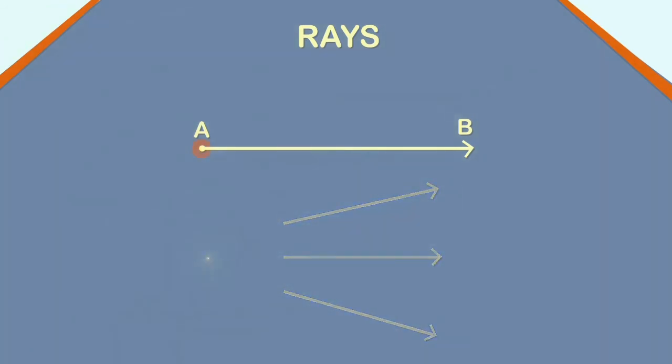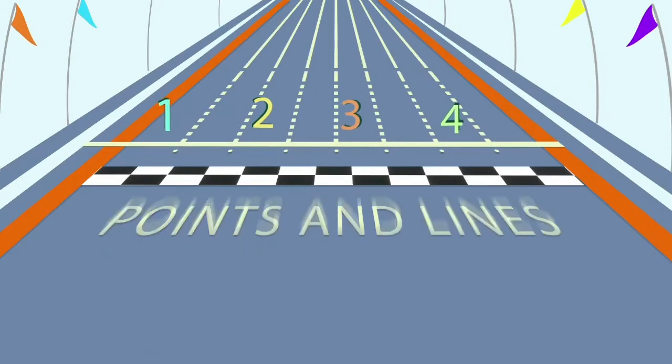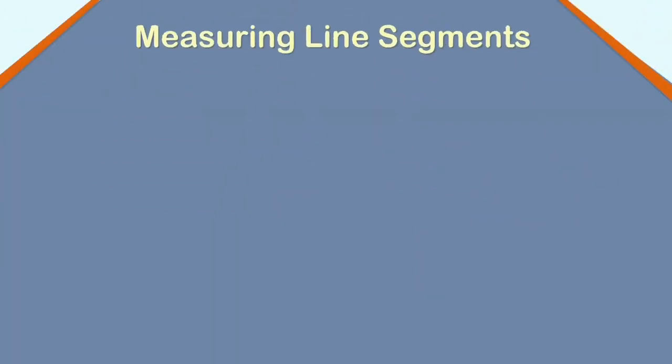A ray has only one endpoint and does not have a fixed length. Hence, it cannot be measured. The above ray can be read as ray AB. It cannot be read as ray BA. The first letter should be the initial point. It can be written as ray AB.